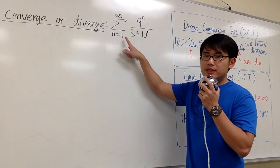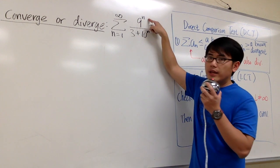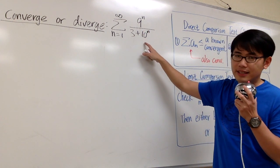We would like to know if this series converges or not. Sigma when n goes from 1 to infinity, 9 to the nth power over 3 plus 10 to the nth power. And here's a strategy.